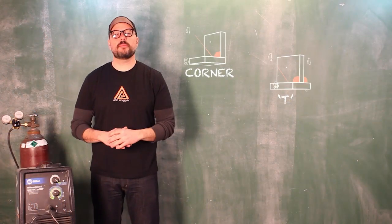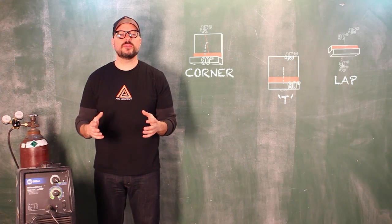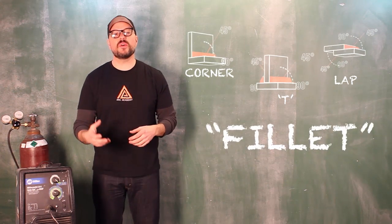Corner joints, T-joints, and lap joints. These are all examples of what's referred to as a fillet weld.